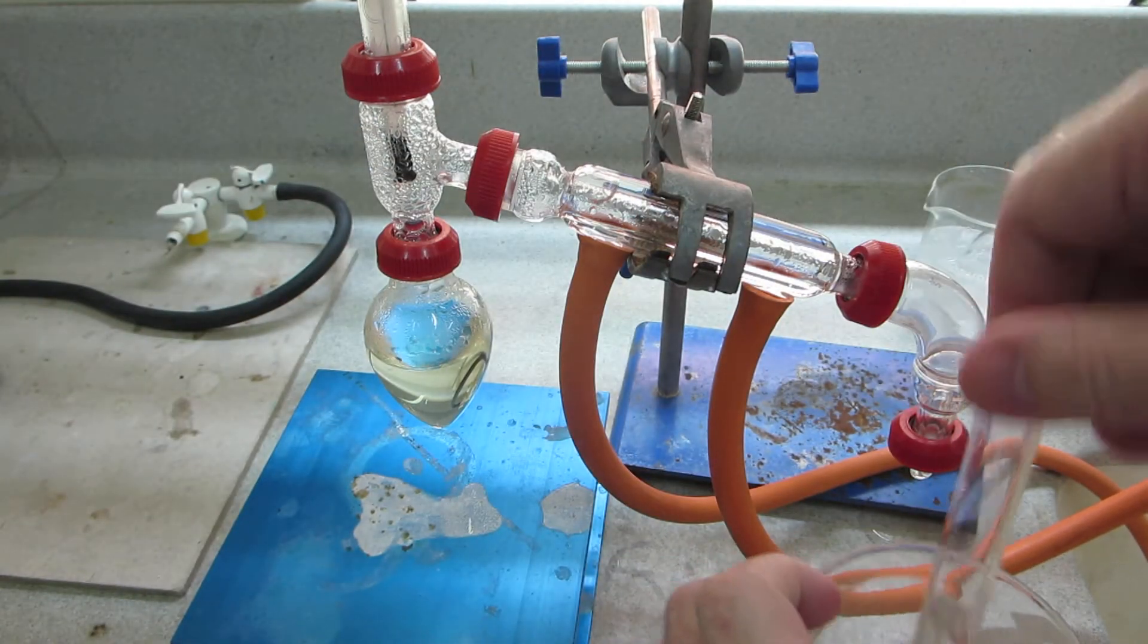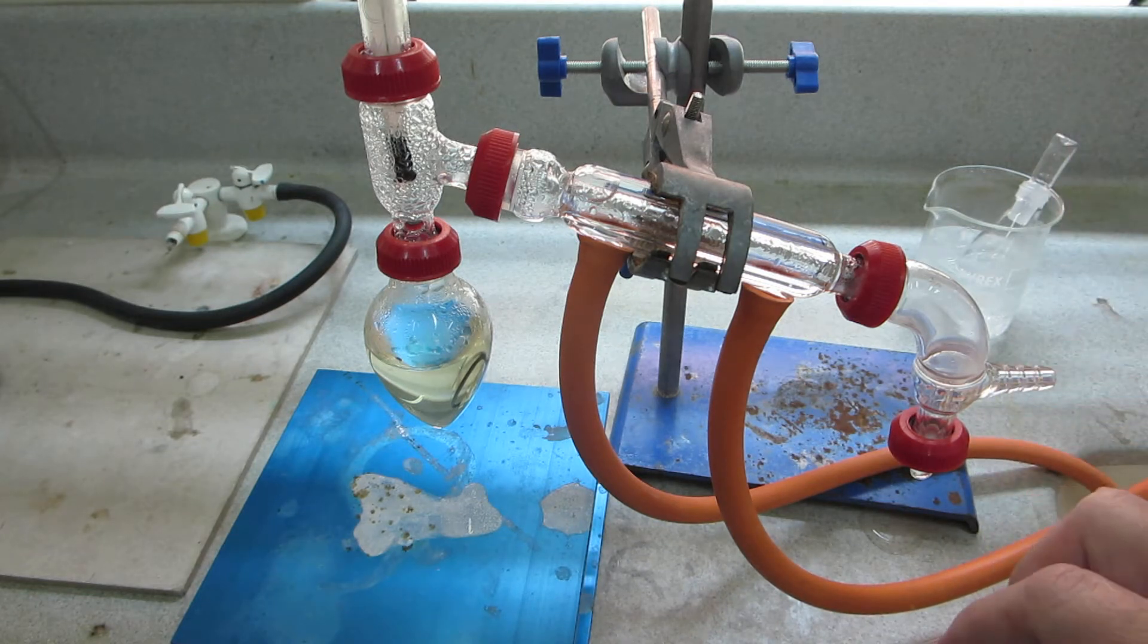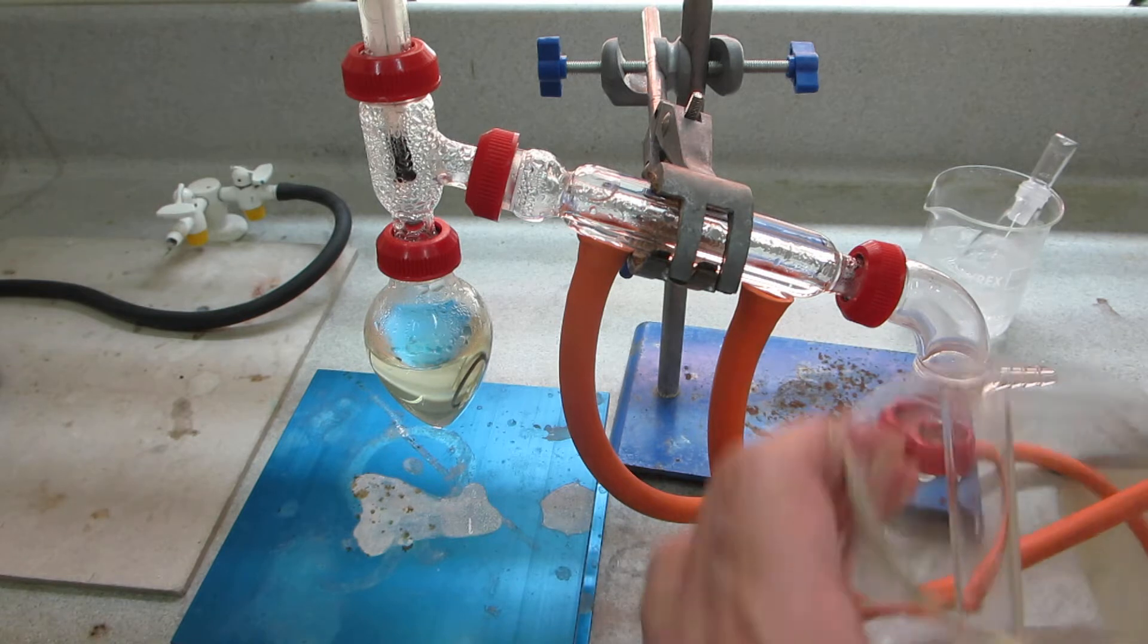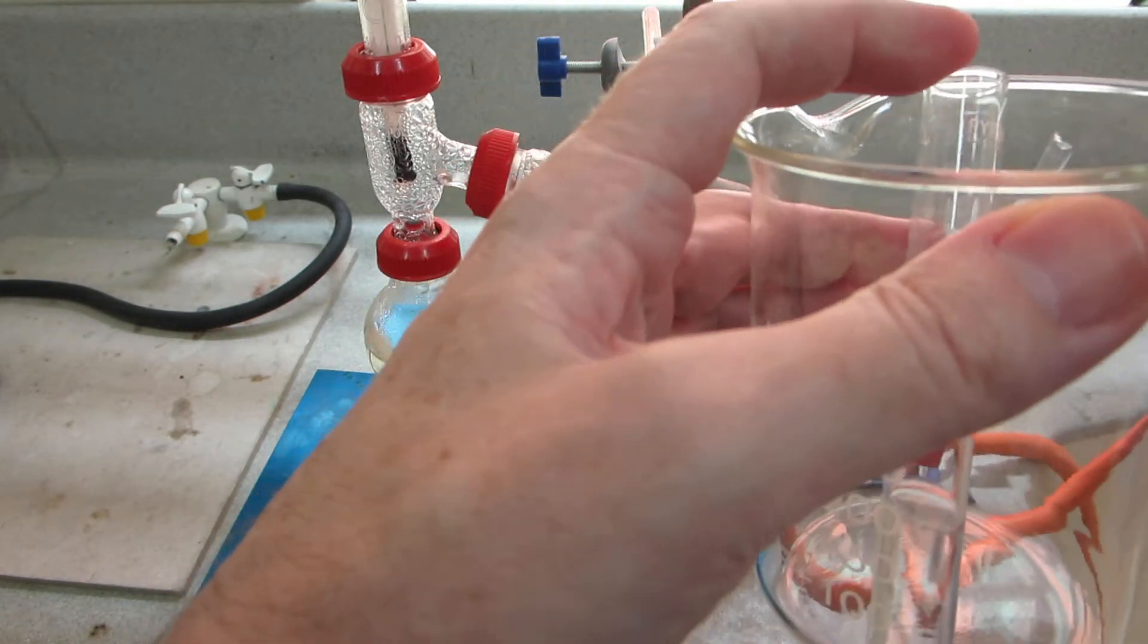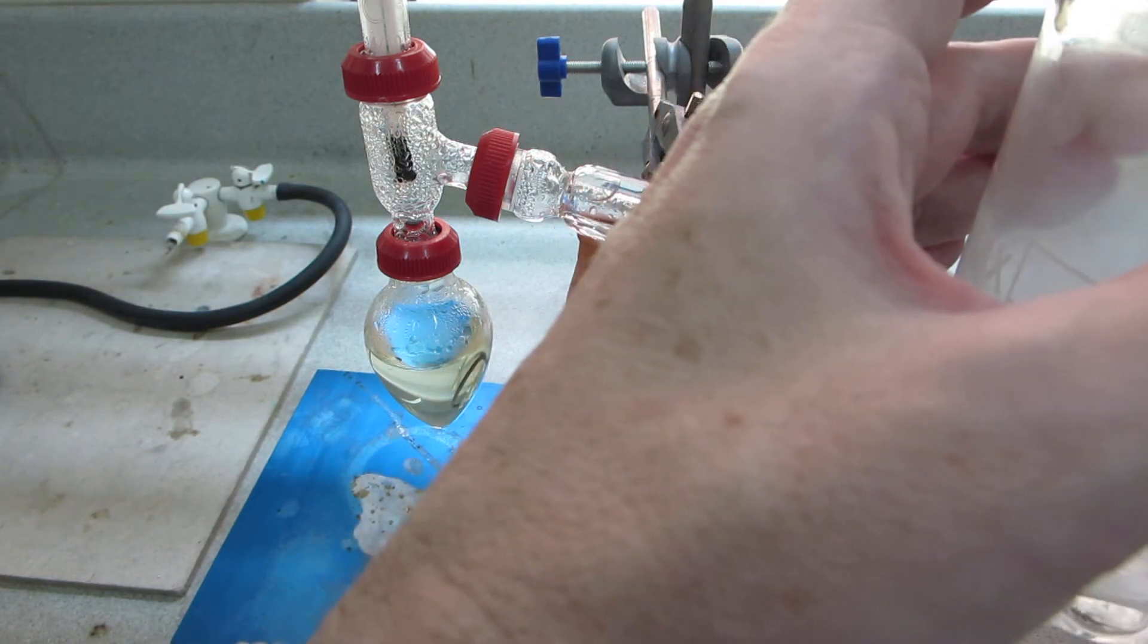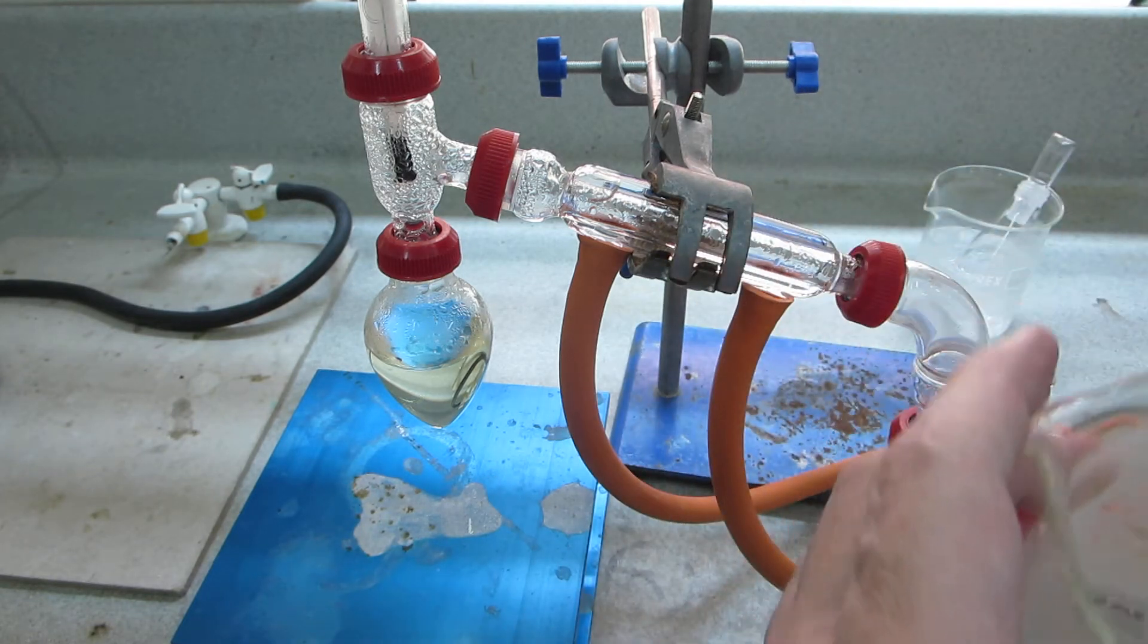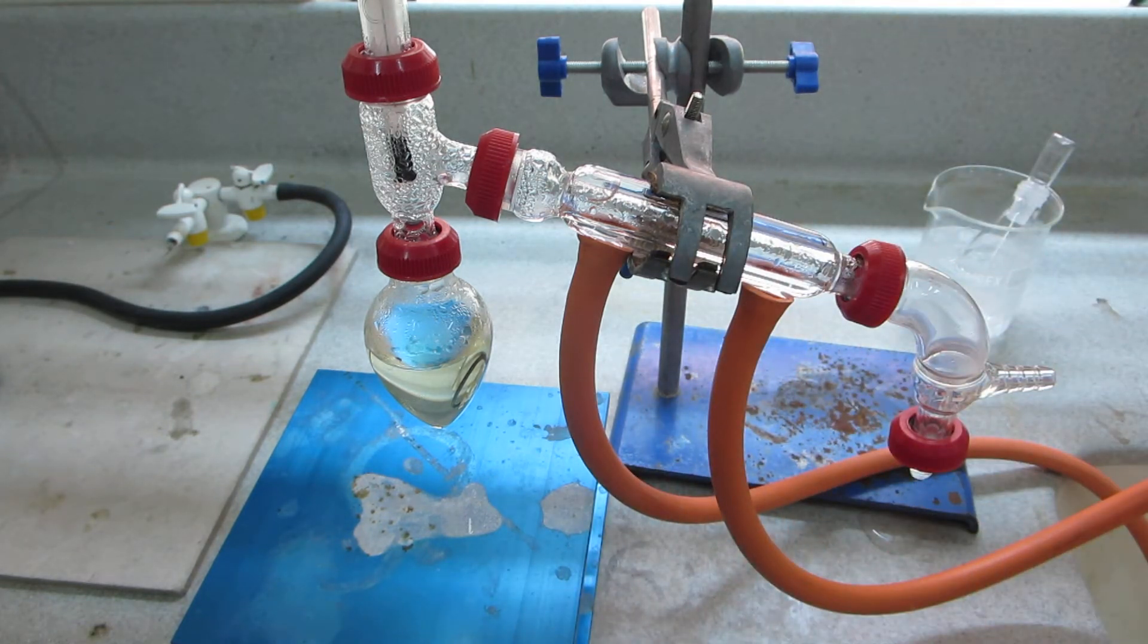And now we need to surround our tube with hot water. We've got a kettle here, and what I've found is that the ethanol product is so volatile that it's best to only half immerse the tube in hot water like so. We've got another camera at the bottom, so we'll monitor that down here.